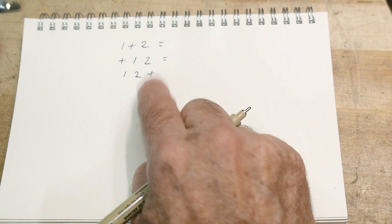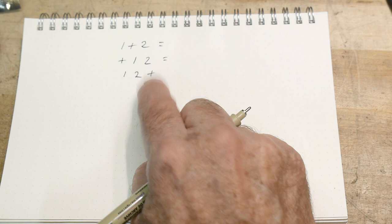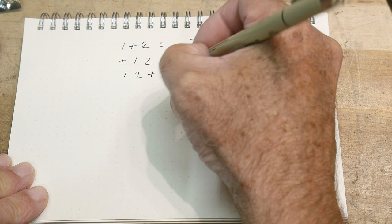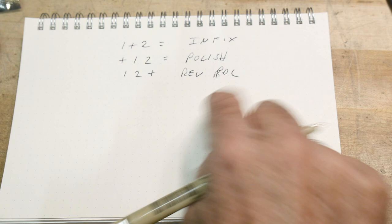Reverse Polish notation is that we would put the 1 and the 2 and then the plus, okay? And that would say, okay, here are the two numbers. This is the operator that you're going to be doing on it. So this one is infix. This one's Polish. And this one is reverse Polish, or RPN, R-P-N, okay.